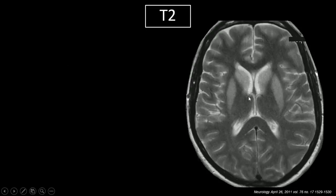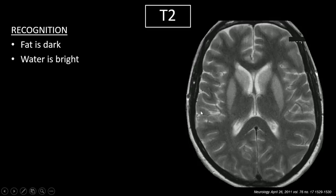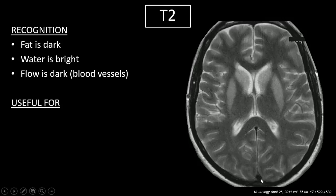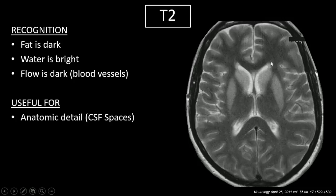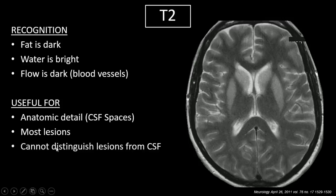Let's pull up our T2 image. How do we recognize it? Everything is flipped — fat is dark. These highly myelinated areas, which are fat, are dark. Water is bright, so look at our CSF right here in the ventricles — it's pretty bright. But flow is dark, and this is called flow void. Where there's fluid moving at a high velocity, like in a blood vessel, it's going to be dark. What is this sequence useful for? Anatomic details — T2 is probably a little bit better than T1, especially for CSF spaces. It's also useful at picking up most lesions in general. One area where it can trip up is when you have lesions or edema really close to CSF spaces, because they'll both be bright.